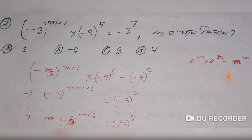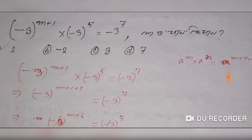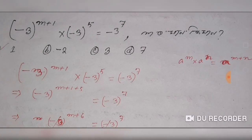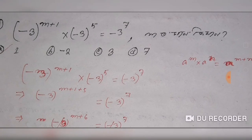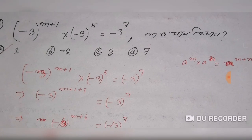The formula is: a to the power M into a to the power N equals a to the power M plus N. We check the power of this. So minus 3 minus 3 — we put this power together.